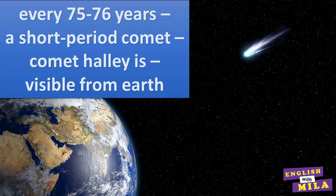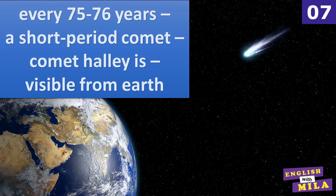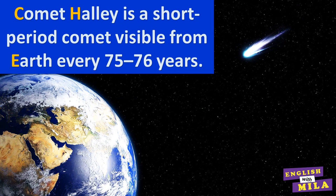'Every 75–76 years, a short-period comet, Comet Halley, visible from Earth.' The correct answer: 'Comet Halley is a short-period comet visible from Earth every 75–76 years.'